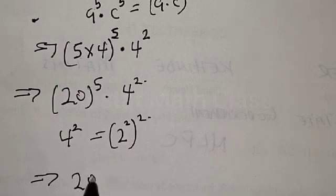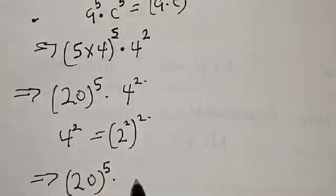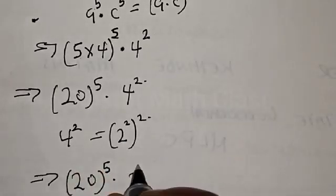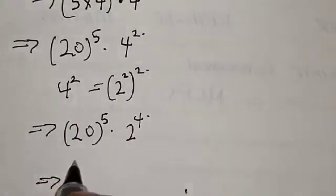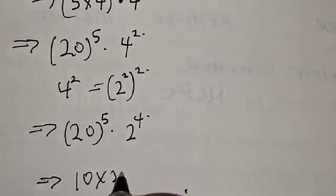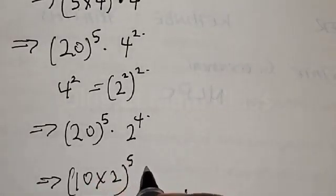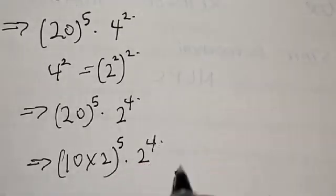Then this implies that we have 20 raised to power 5 multiplied by 2 raised to power 4. Now 20 can also be expressed as 10 times 2, so we have (10 times 2) raised to power 5 multiplied by 2 raised to power 4.